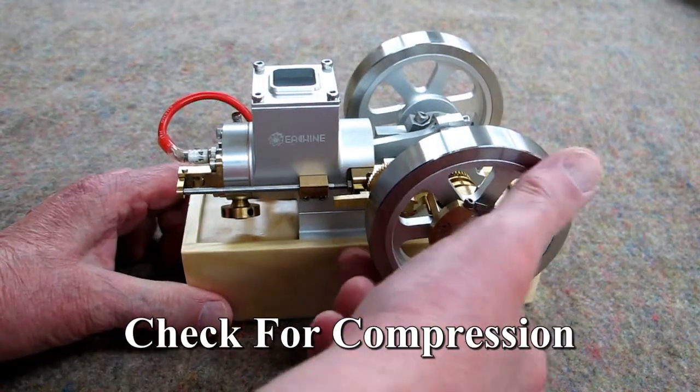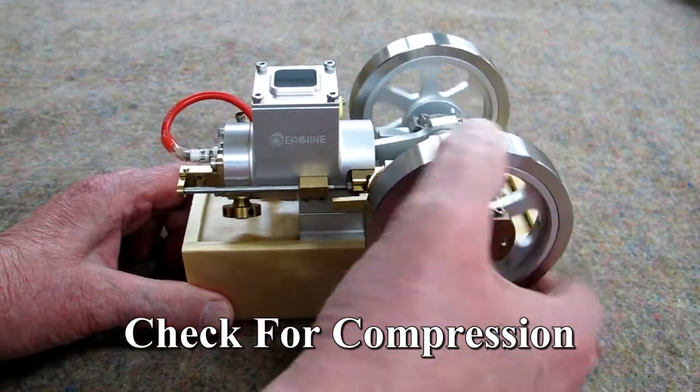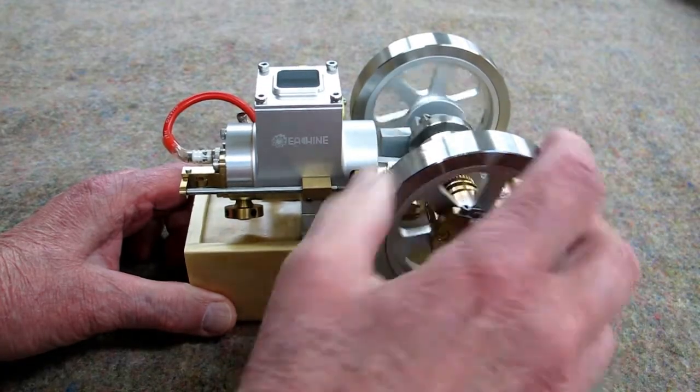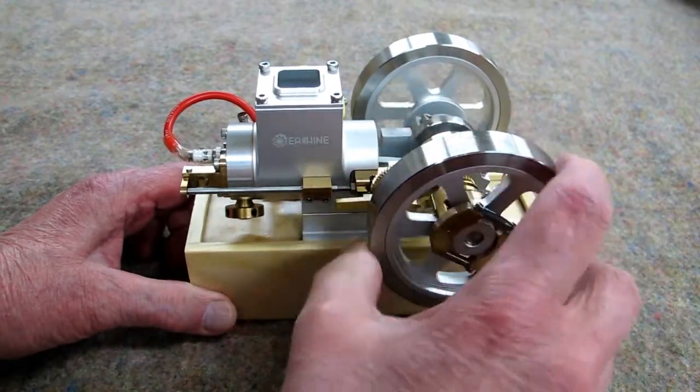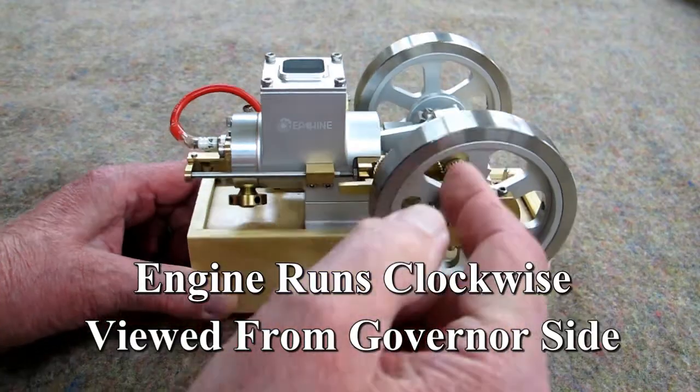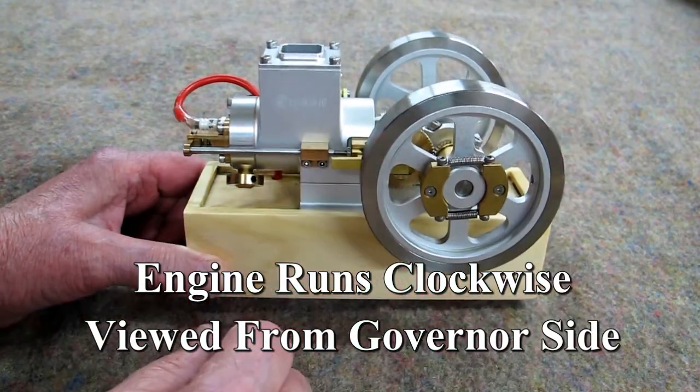First thing you want to do is make sure that you have compression. These have pretty good compression. When you start them, you turn them this way. As you view the governor's side, you're turning clockwise.